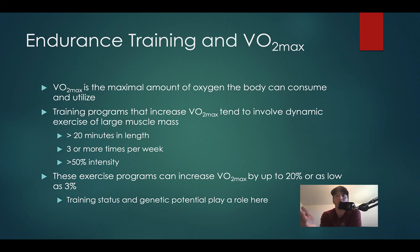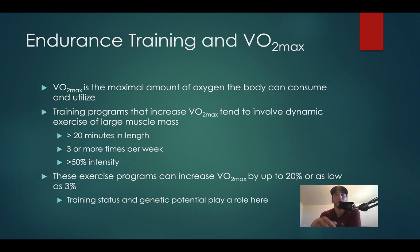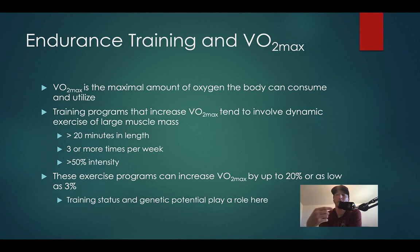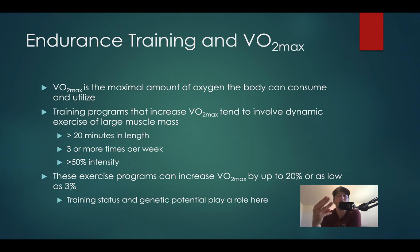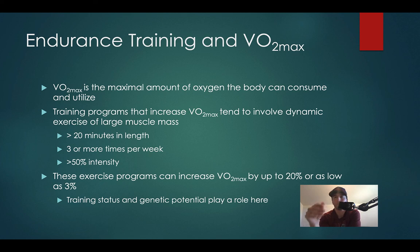Since this lecture is on endurance training and adaptation to endurance training, we have to talk about VO2 max — the maximal amount of oxygen you can consume and utilize. To increase VO2 max with exercise training programs, we need a minimum of 20 minutes in length, occurring three or more times a week, at greater than 50% intensity of our VO2 max. We need to be working relatively hard, relatively long, and relatively often. Following those minimums, you can improve VO2 max anywhere from 3% to 20%.